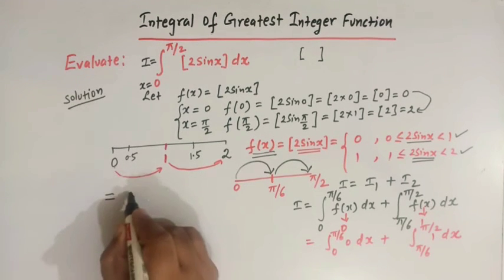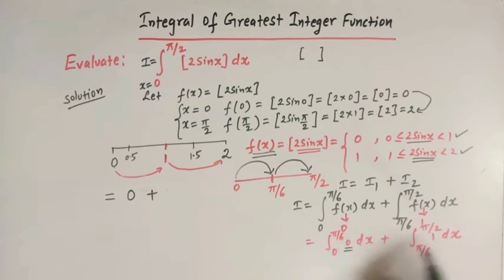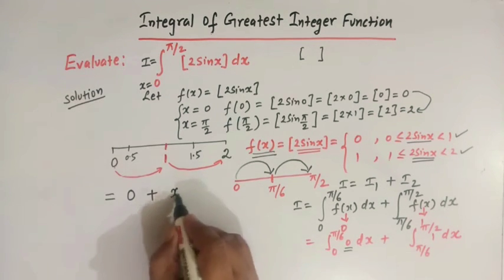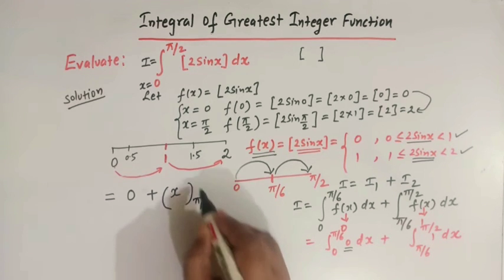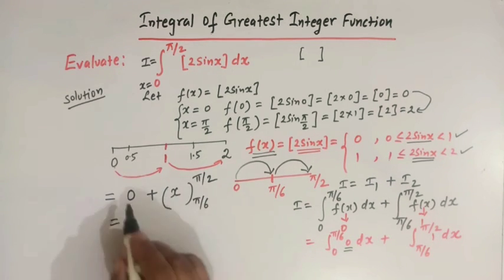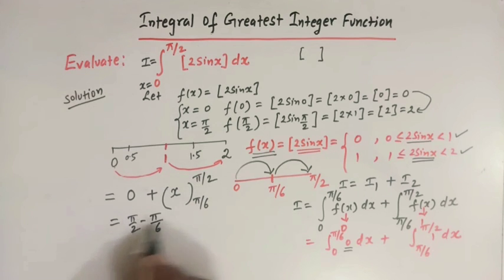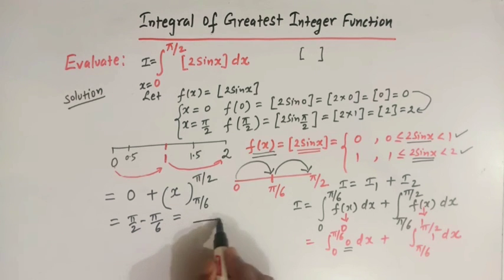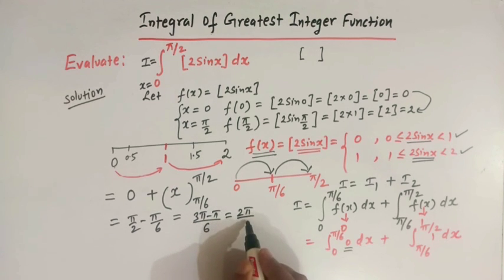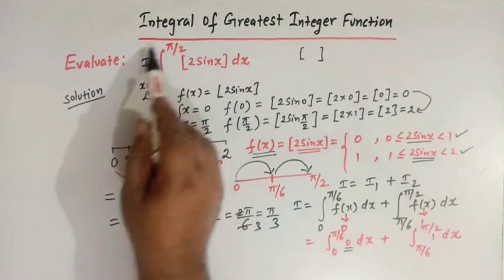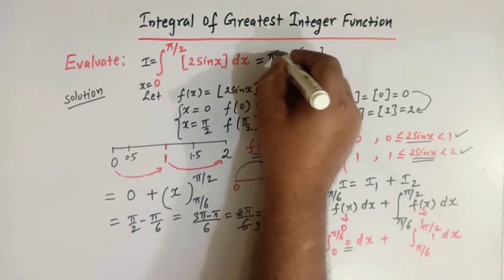The first integral is 0 since the integrand is 0. For the second integral, ∫1 dx = x, evaluated from π/6 to π/2. This gives π/2 − π/6. Taking LCM 6: (3π − π)/6 = 2π/6 = π/3. So the value of this definite integral is π/3.